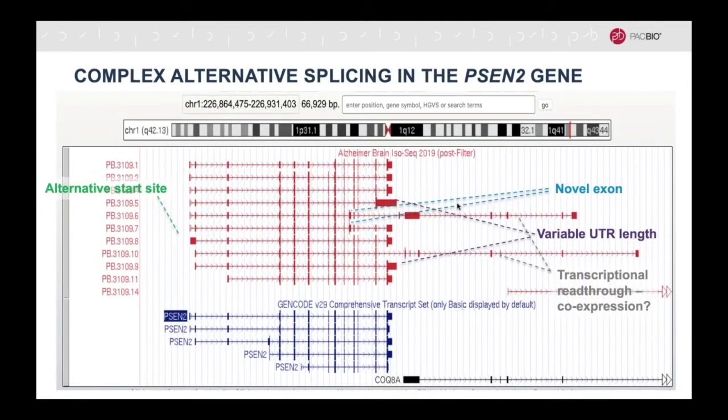Here are some examples of the complex alternative splicing that are seen in genes. On the bottom, in blue, is the current known transcripts for the PSEN2 gene, a candidate gene for Alzheimer's. On the top, in red, are the novel isoforms detected using IsoSeq, including different patterns that are alternative start sites, novel exons, variable UTR regions, and also a transcriptional read-through with a neighboring CoQ8A gene.